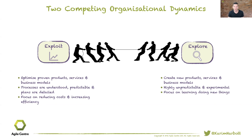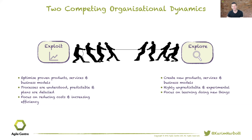If you have a proven product, service, or business model and just need to execute against it, we call that exploiting. You might make incremental improvements, focus on efficiency, but you're not doing anything dramatically new — you can make plans and predictions with reasonable certainty. Take a pharmaceutical company manufacturing and distributing pills: they know how to do that, no experimentation needed. Exploring, on the other hand, is when organizations create new knowledge, products, services, or business models.